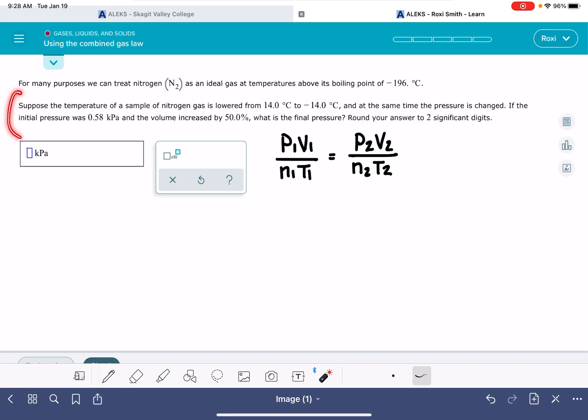Let's take a look at the problem and see which variables have been provided to us. First, it tells us that we have a sample of gas. The temperature is being lowered from 14 degrees Celsius, so that's our initial temperature. We need to have that in units of Kelvin, so I'm going to do that conversion right now. 14 plus 273 is 287 Kelvin. The temperature is lowered from 14 to negative 14. So negative 14 is going to be our T2, 273 minus 14 is 259 Kelvin.